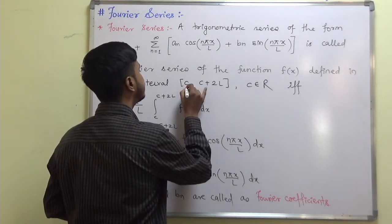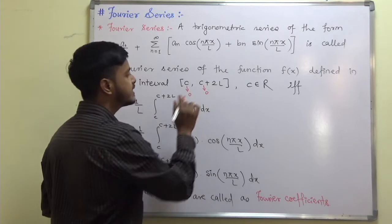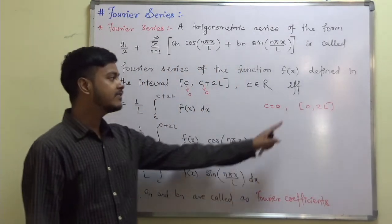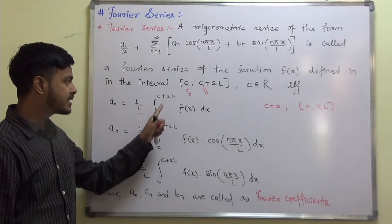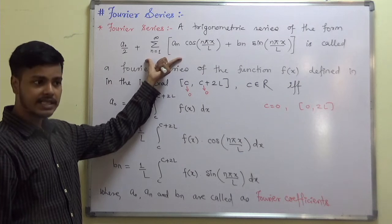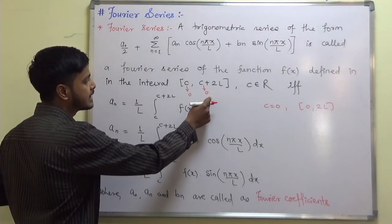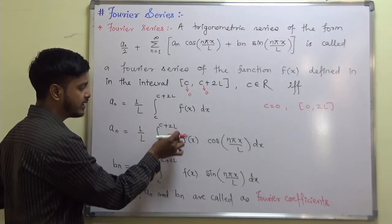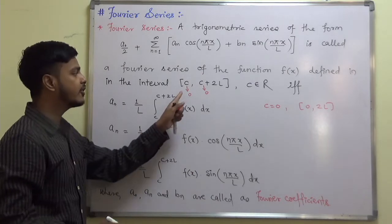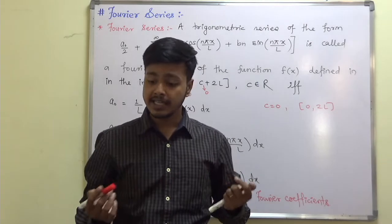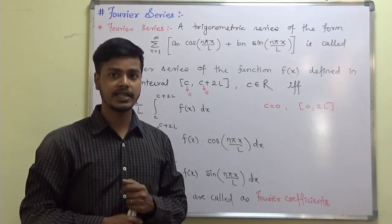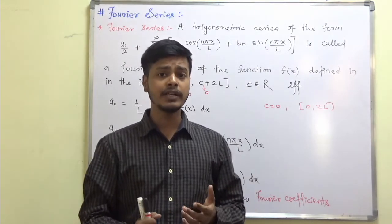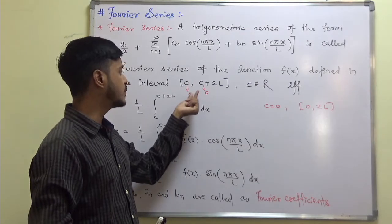Suppose c is equal to 0. If c = 0, then the interval becomes 0 to 2L. So if the interval is 0 to 2L, the Fourier series for f(x) uses integration limits 0 to 2L throughout all coefficients: a₀, aₙ, and bₙ. Depending on the value of c and the value of L, we have different cases for the Fourier series expansion of f(x). In the upcoming video lecture, we are going to start with the Fourier series for f(x) defined in the interval 0 to 2L. This is Case 1.